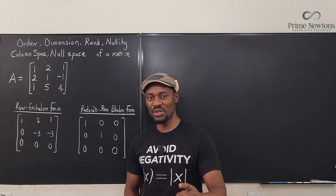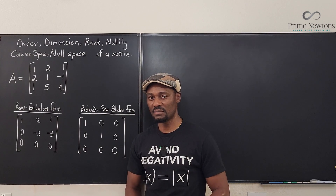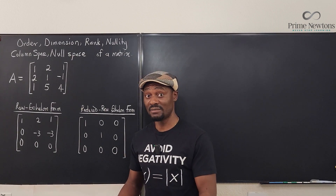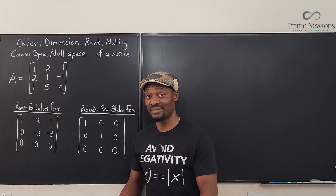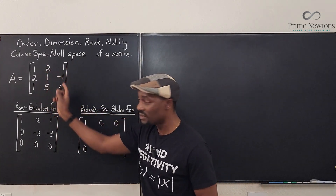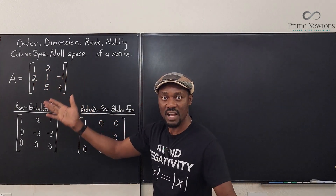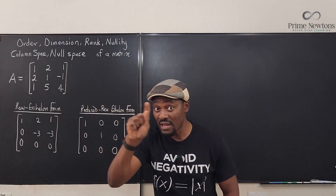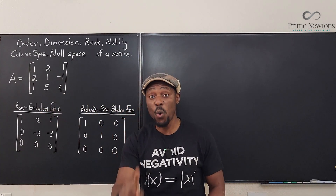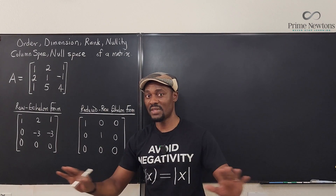The first thing we're going to talk about is the order of a matrix. Any matrix you see has elements in it. This one has nine elements — you can count one through nine. The number of elements you see in a matrix is the order of the matrix. That's out of the way.